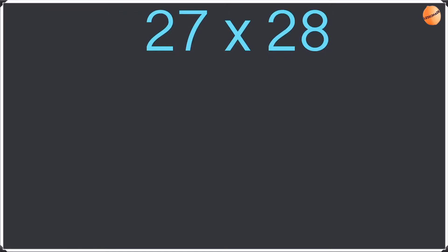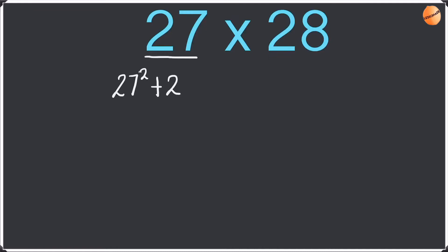So there are two ways of doing this question. We're going to look at the first way, which is by using the smaller number out of the pair, which is 27. So we're going to square the smaller number — 27 squared — and then we're going to add this to 27 itself. So 27 squared plus 27.